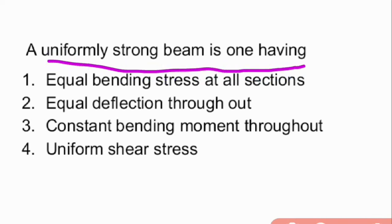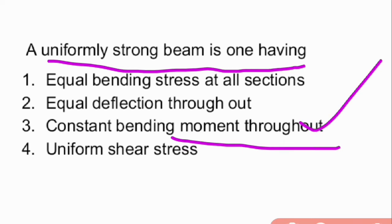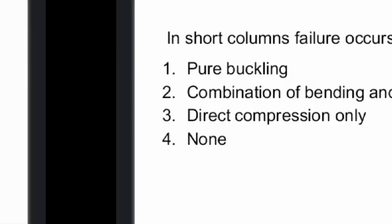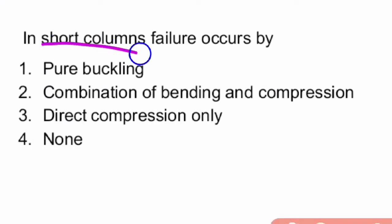Next question: a uniformly strong beam is one having what property? A uniformly strong beam is the one which has a constant bending moment throughout. That is option three, the right answer.